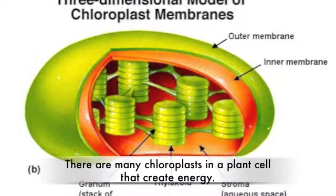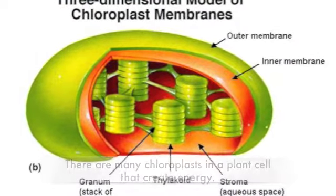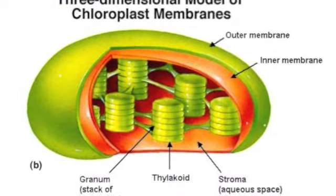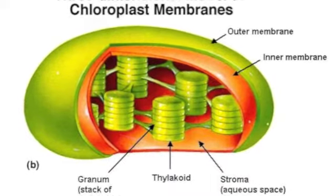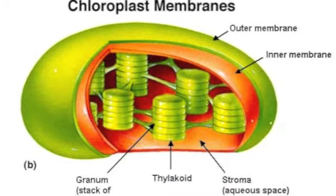This is a chloroplast. It has an outer and inner membrane, as you can see. In addition, the stroma is the cytoplasm between the granum. Here, Davis is in a layer of thylakoid discs called a granum. There are many granums within each chloroplast.